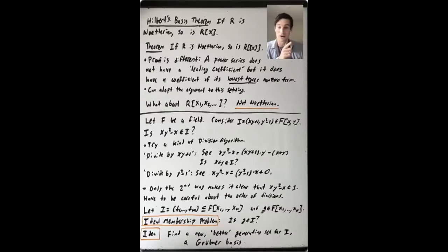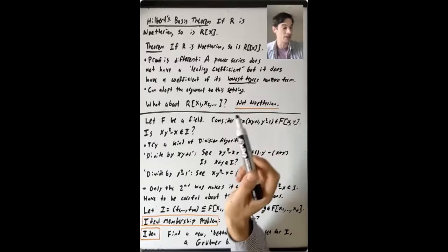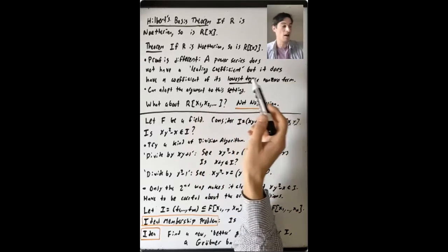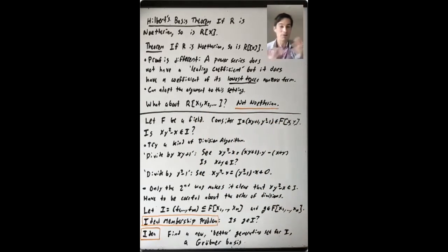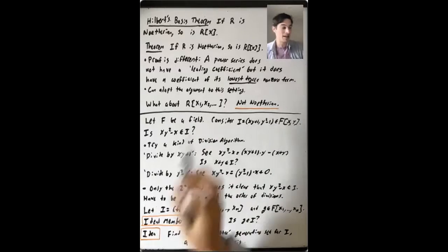Like the powers of X can get arbitrarily large, but there does have to be a smallest term, a term of smallest degree. So it doesn't have a leading coefficient, but it does have a coefficient of its lowest degree non-zero term. And you can kind of flip this argument around and adapt it to this setting.